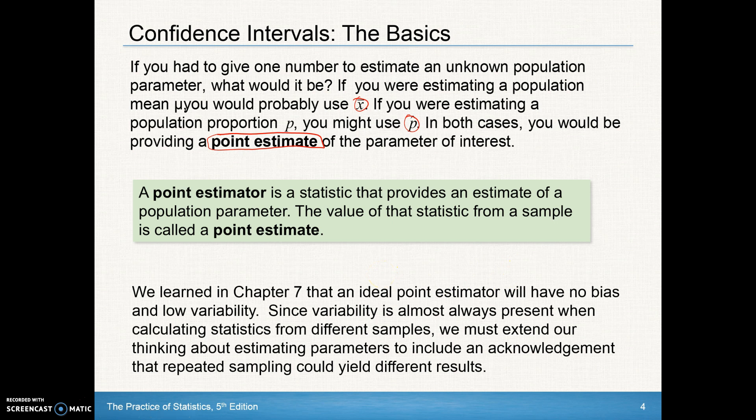We learned in Chapter 7 that an ideal point estimate will have no bias and low variability. Since variability is almost always present when we calculate statistics from different samples, you've got to extend your thinking about estimating parameters and include an acknowledgement that repeating a sampling could yield different results. In other words, as we obviously said before, many different samples are going to get many different results. So we realize that in variability.